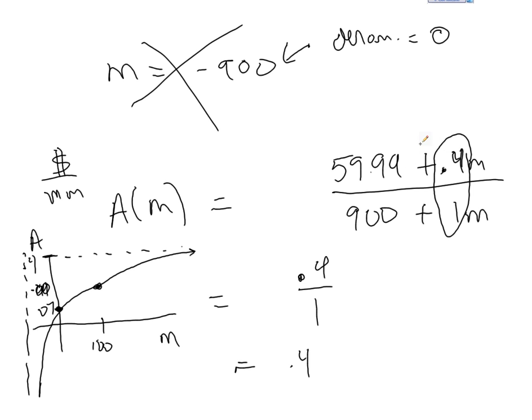But now you're incurring 40 cent additions for every additional minute you increase as overage, and so naturally your average is going to go up. It's going to approach 40 cents per minute, because this term will dominate.